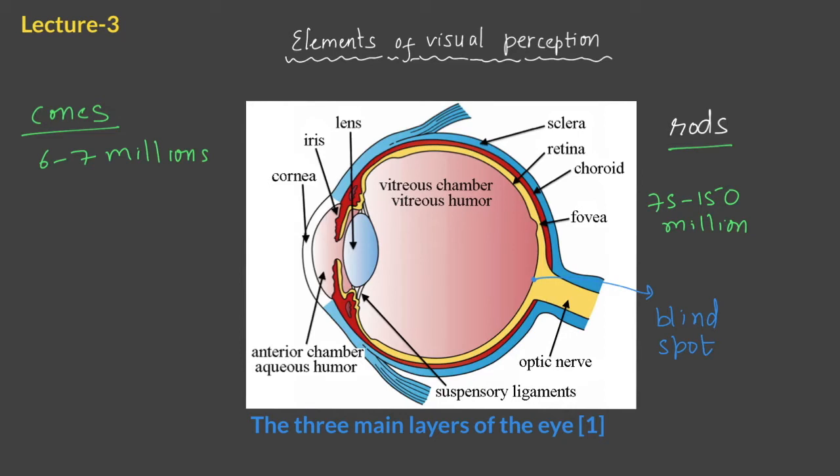Human eye has no sensor in this area but human brain sort of fills in the information depending upon the rest of the region, so what we perceive is the combination of image formed on the retina as well as the processing of the brain. It is interesting to see that the size of this fovea is only about 1.5 mm by 1.5 mm and that is responsible for all the colors that we can sense using our eyes.